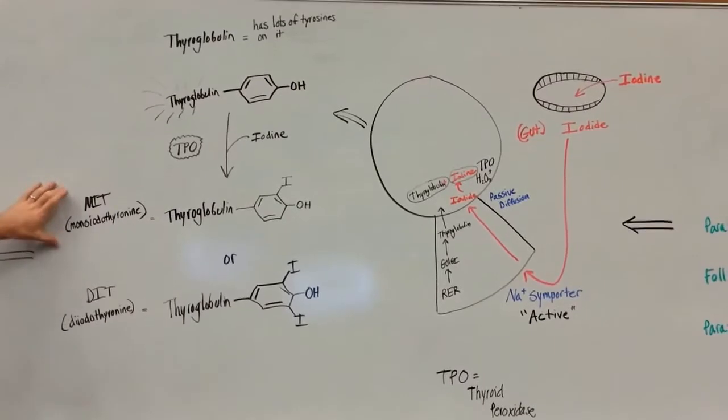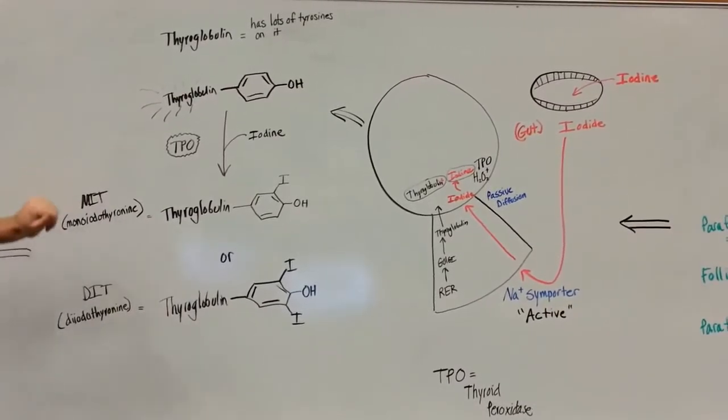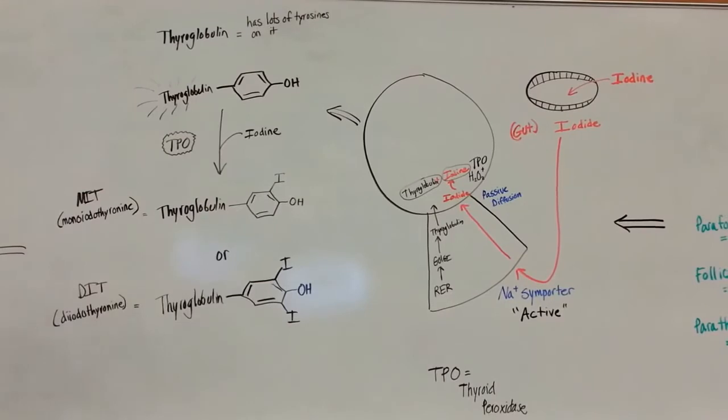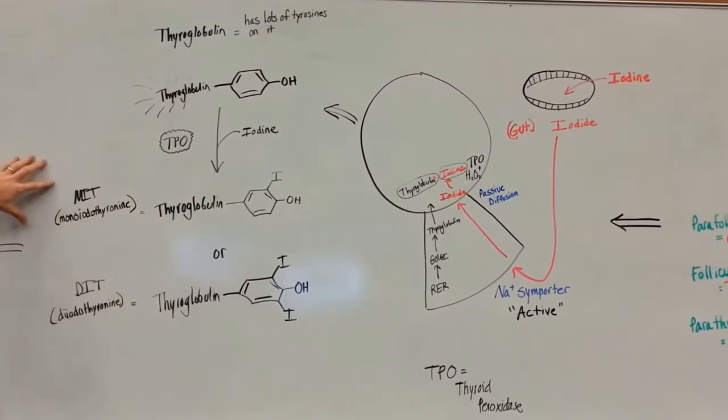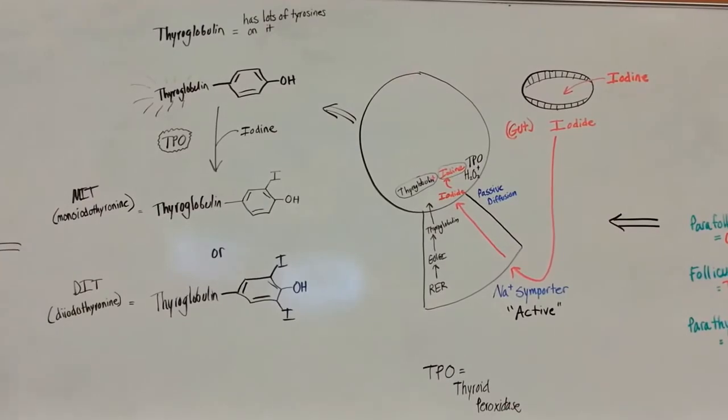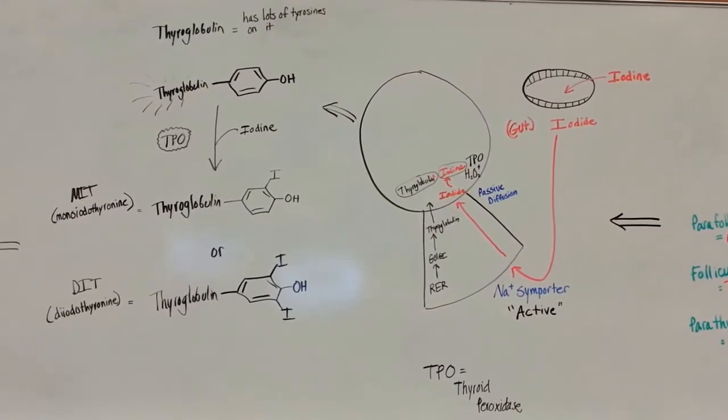This can happen in two ways. It can happen singularly, where only one iodine gets transferred over onto your tyrosine. And that's going to be called monoiodothyronine, MIT for short.